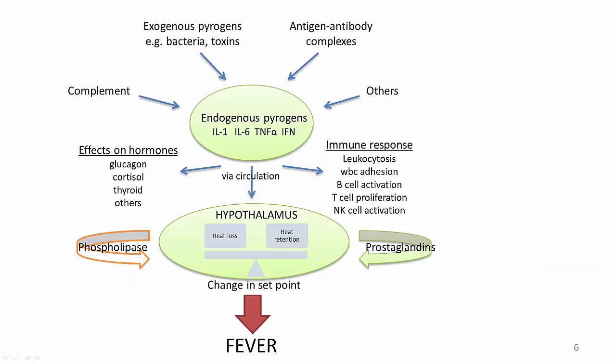What leads the hypothalamus to up or down regulate body temperature involves a complex cascade of inflammatory cytokines. Some of these factors involve the production of exogenous pyrogens — factors that stem from outside the body — from toxins, bacteria, and many other microbes. Many different endogenous factors, such as antigen-antibody complexes and activation of the complement system, can also stimulate the sequence. Any of these factors then leads to the production of endogenous pyrogens by inflammatory T-cells, including interleukins, tumor necrosis factor, and interferons.